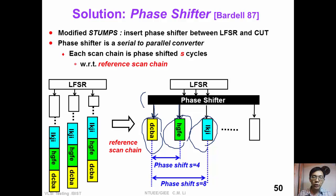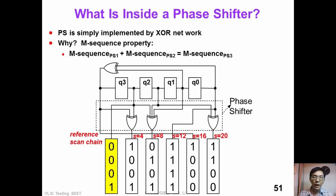The phase shifter sounds like a good idea. It removes the structural dependency problem. However, how can we implement this phase shifter? Surprisingly, phase shifter can be easily implemented by exclusive-or network as shown in this figure.